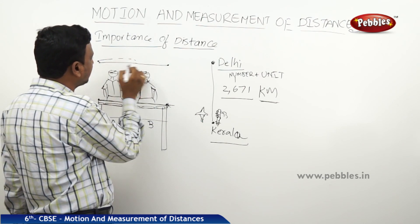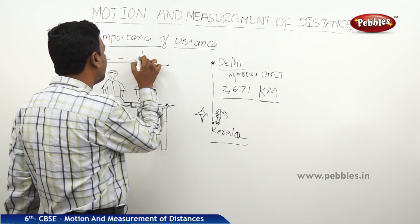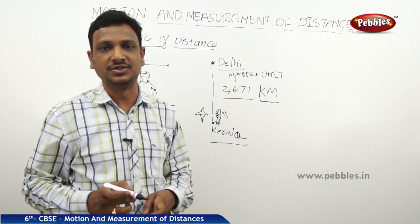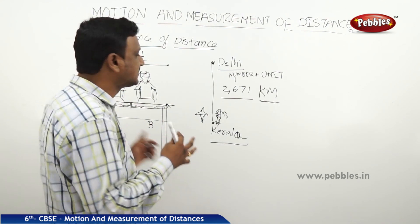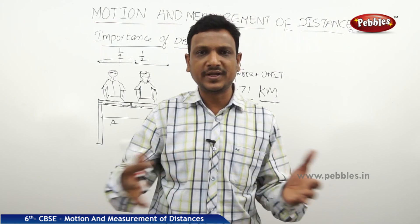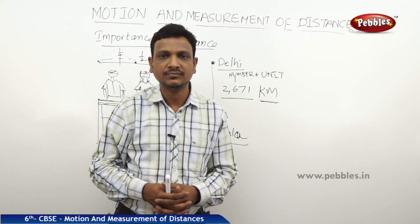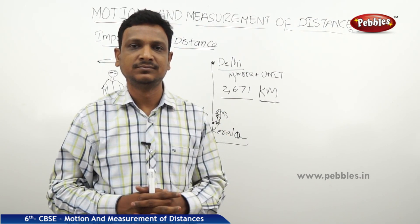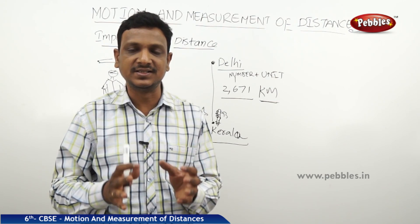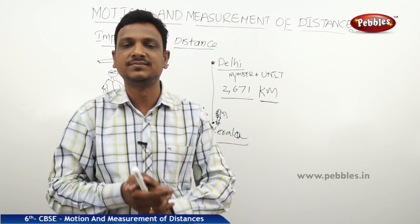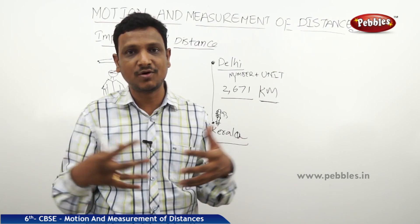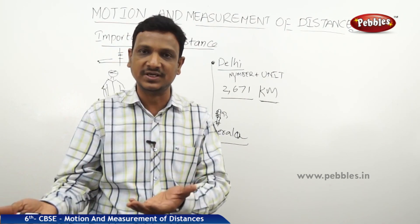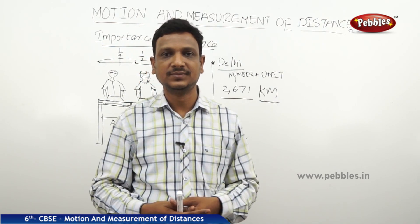They folded the string and at the center point they marked it — that is one-half. They folded it again and marked one-fourth. With this they can accurately measure the distance. But even with strings it is not always possible — for very long distances you cannot carry such a long string. So there is a necessity to have special devices for measurement, to represent distance in special units accepted by everybody. Otherwise there will always be conflict and confusion.